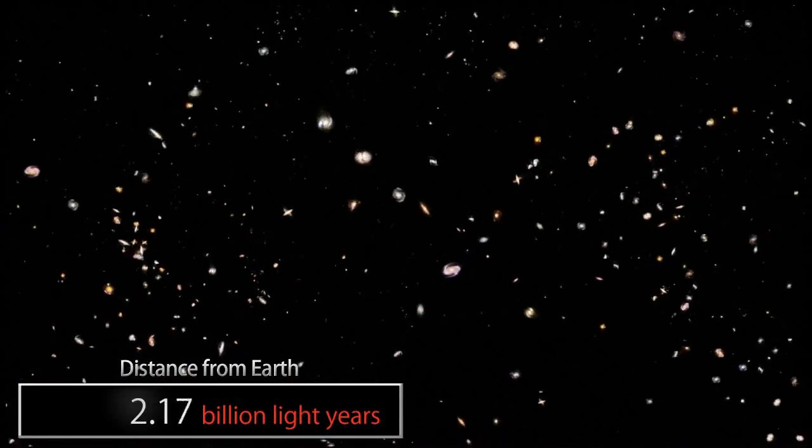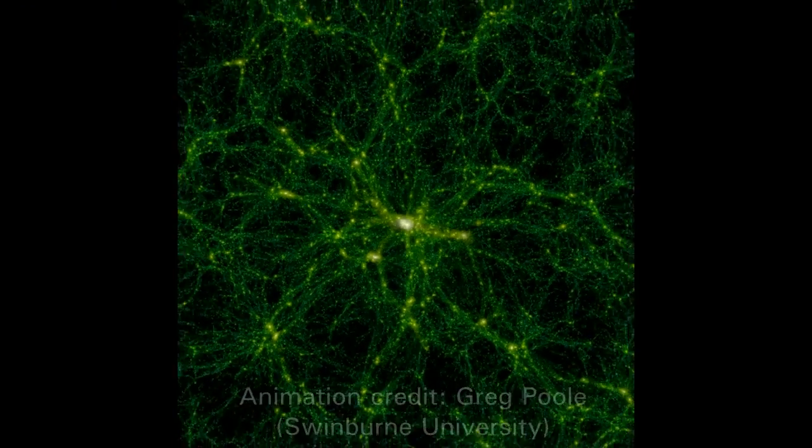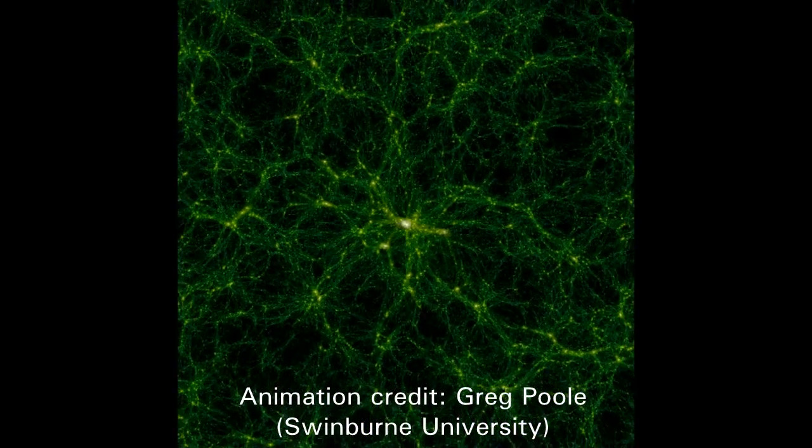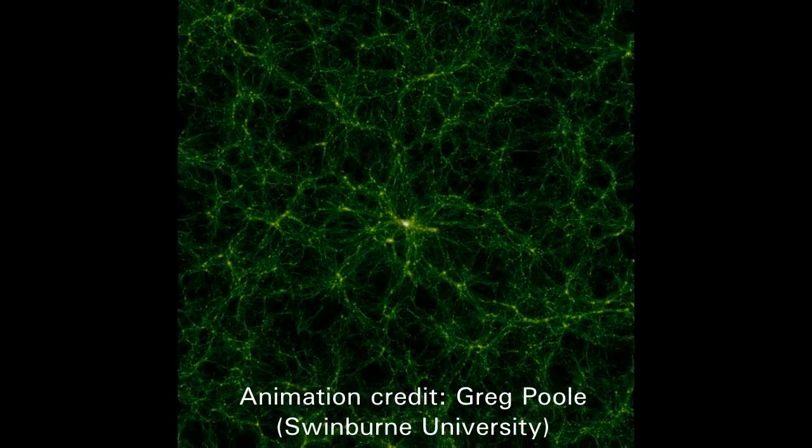For decades, scientists have debated this very question. The standard model of cosmology assumes that the universe is smooth on very large scales. That is, the superclusters are homogeneously distributed, like a random set of points, with no pattern.